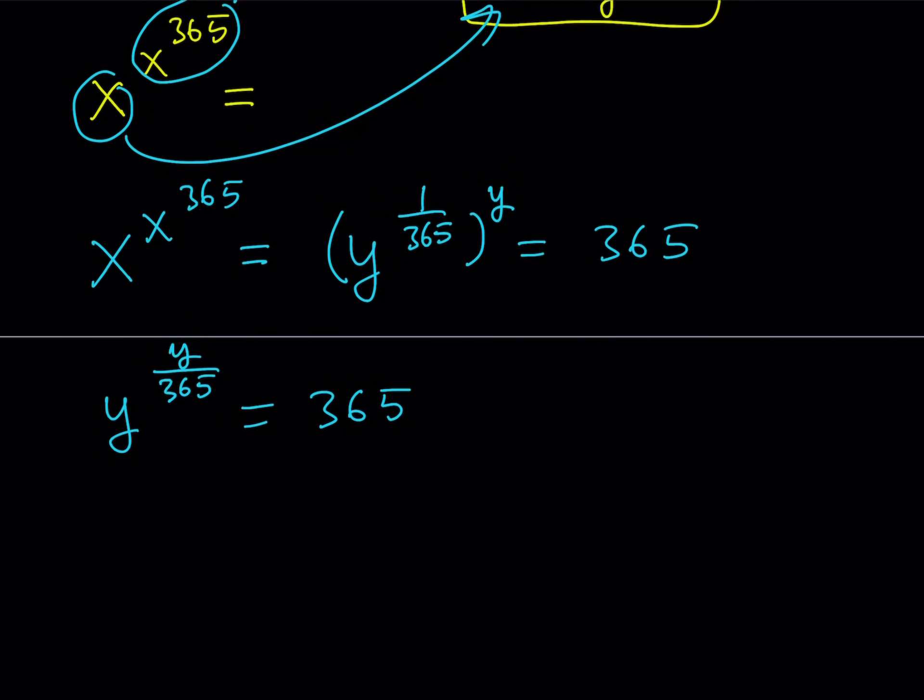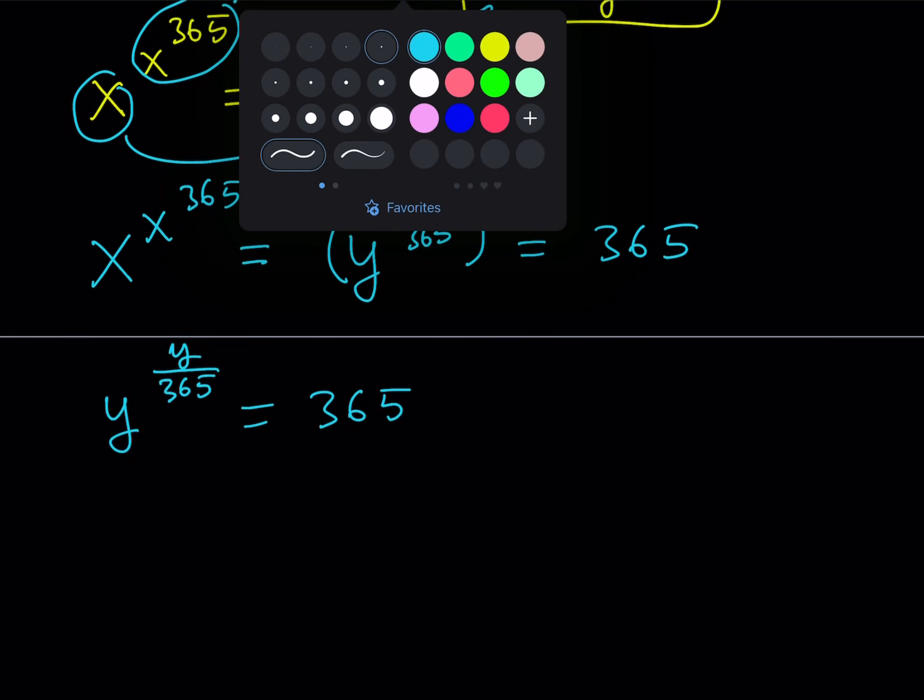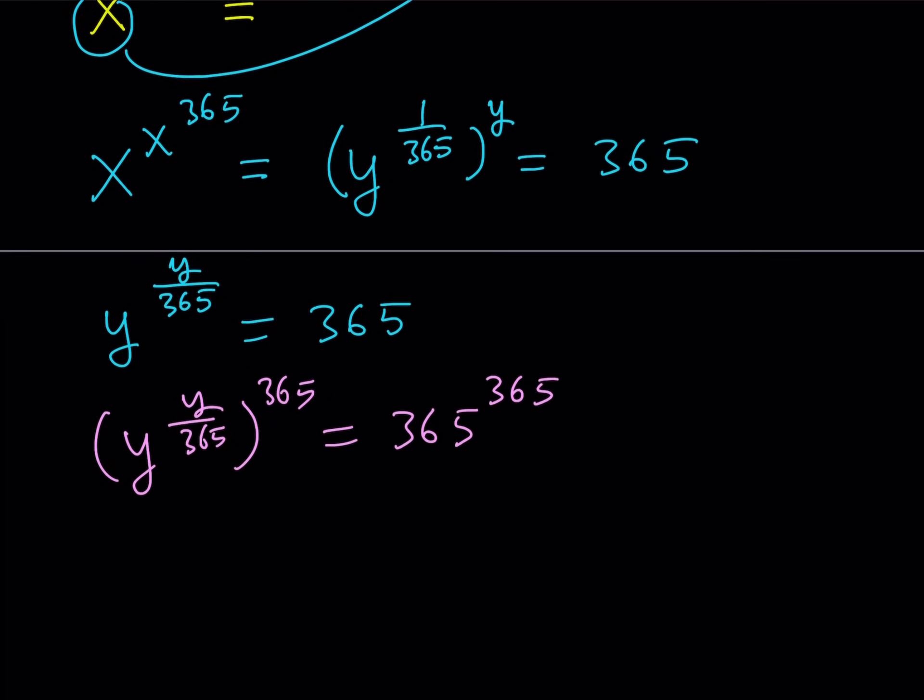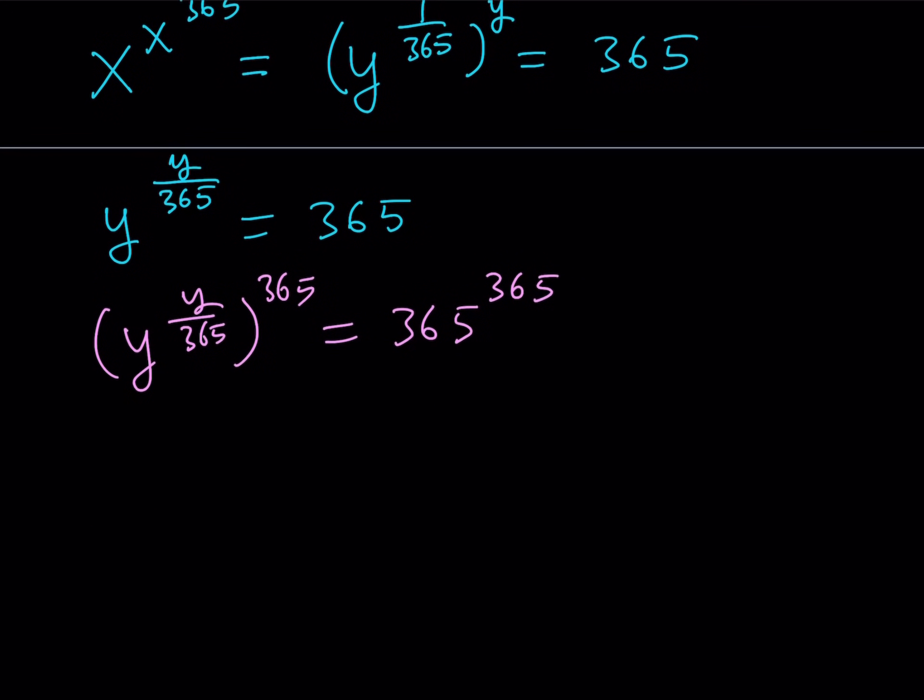Now at this point, I can just get rid of the fraction by raising both sides to the power 365. So let's go ahead and do that. So you'll take this expression here and raise it to the power 365. And on the right hand side, you'll do the same thing. That's obviously going to be a very large number. But we'll deal with that in a little bit. So here the 365 cancels out and we end up with something super duper nice. That's why this problem is so special because it simplifies really nicely. So from here I'm getting y to the power y is equal to 365 to the power 365.